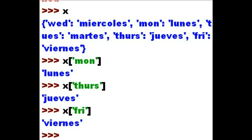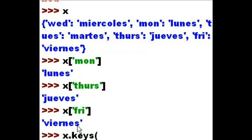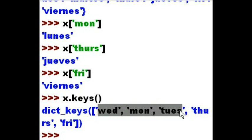Could I get a list of all those keys? I'd like to see what they are. Sure you can. Let's do that now — X dot keys(). And there they are. The dictionary keys are Wednesday, Monday, Tuesday, Thursday, and Friday.